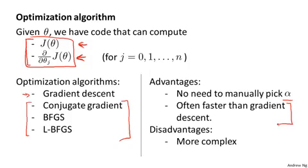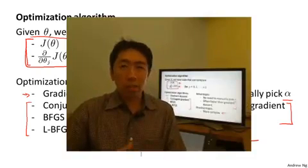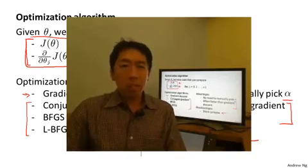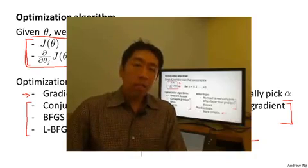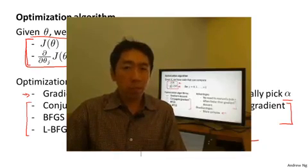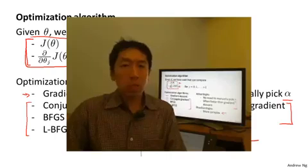If these algorithms have a disadvantage, I would say the main disadvantage is that they're quite a lot more complex than gradient descent. In particular, you probably should not implement these algorithms — conjugate gradient, L-BFGS, BFGS — yourself, unless you're an expert in numerical computing. Instead, just as I wouldn't recommend that you write your own code to compute square roots of numbers or to compute inverses of matrices, for these algorithms also, what I would recommend is just use a software library.